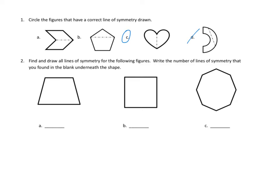Let's take a look at number two. I'm going to do just the simpler ones here. Find and draw all lines of symmetry for the following figures. Write the number of lines of symmetry that you found in the blank underneath the shape. I'm going to take a look at B, because B is fantastic.